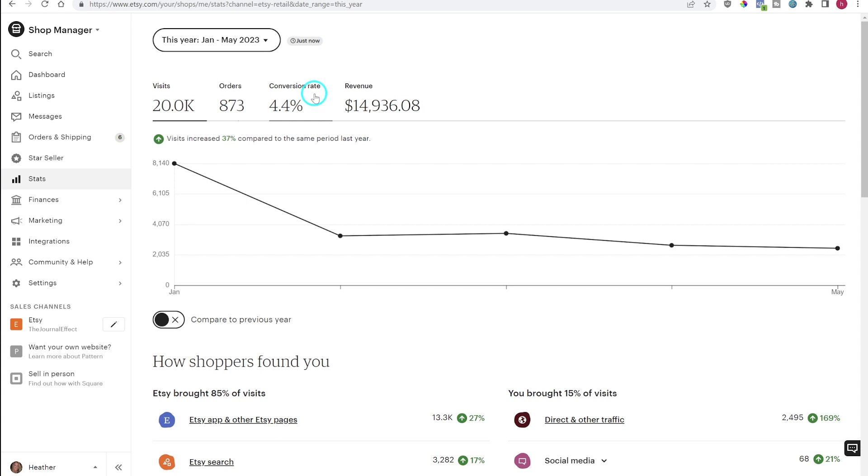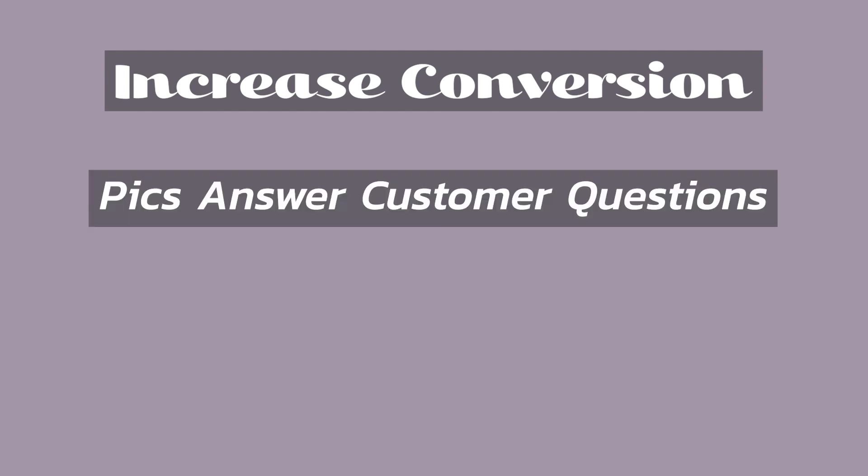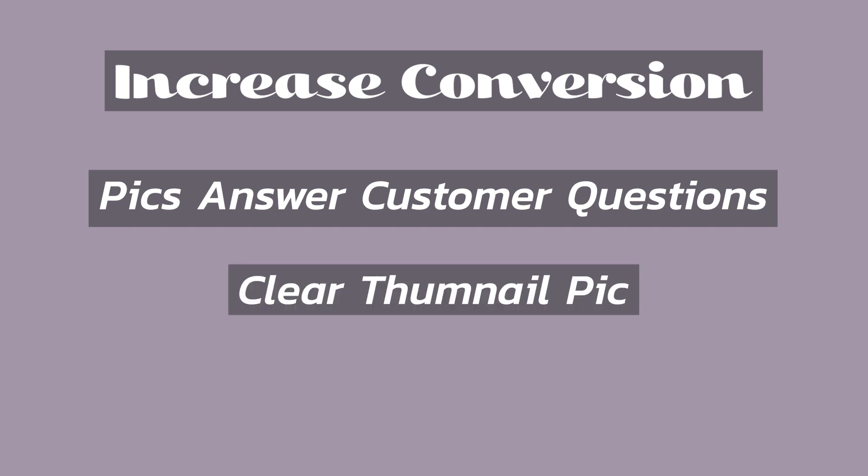Very quickly, a few things you can do to improve your conversion rates. First, make sure your pictures and descriptions are answering any questions that your customer might have. Also make sure your thumbnail is correctly representing the item you're selling. Be careful with mock-up images — make sure it's clear what the product is so customers don't click through only to find it's not what they thought.